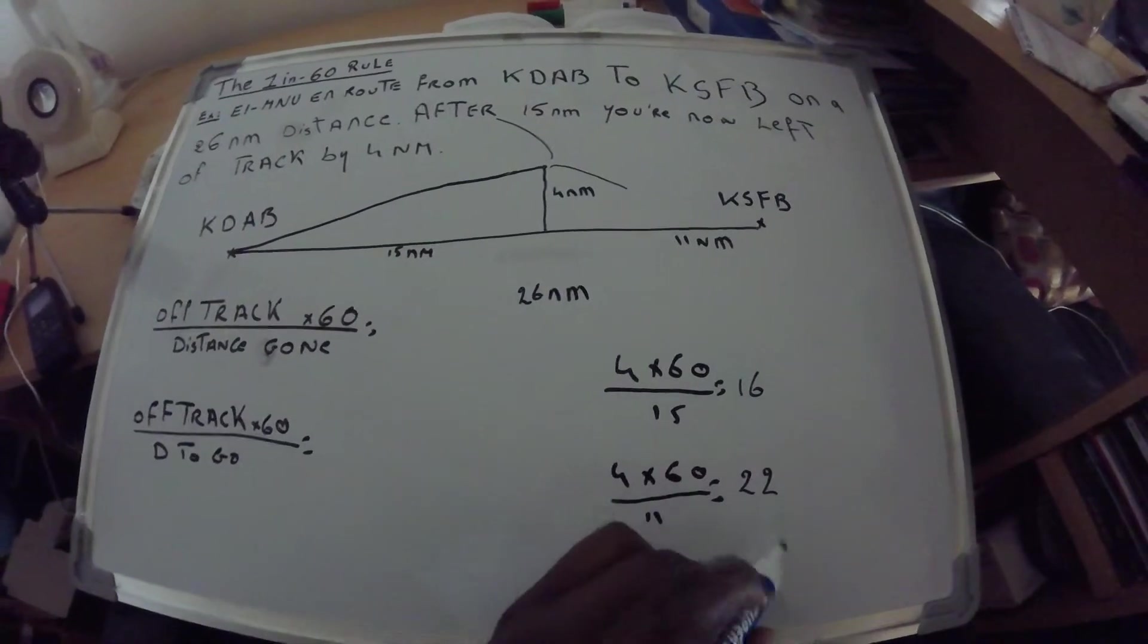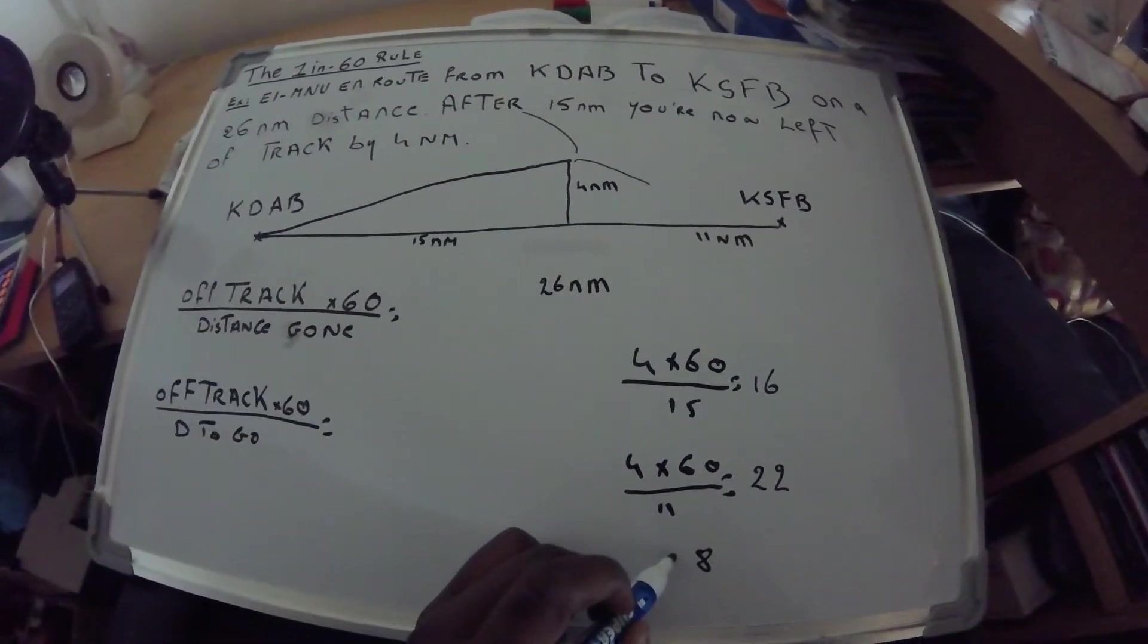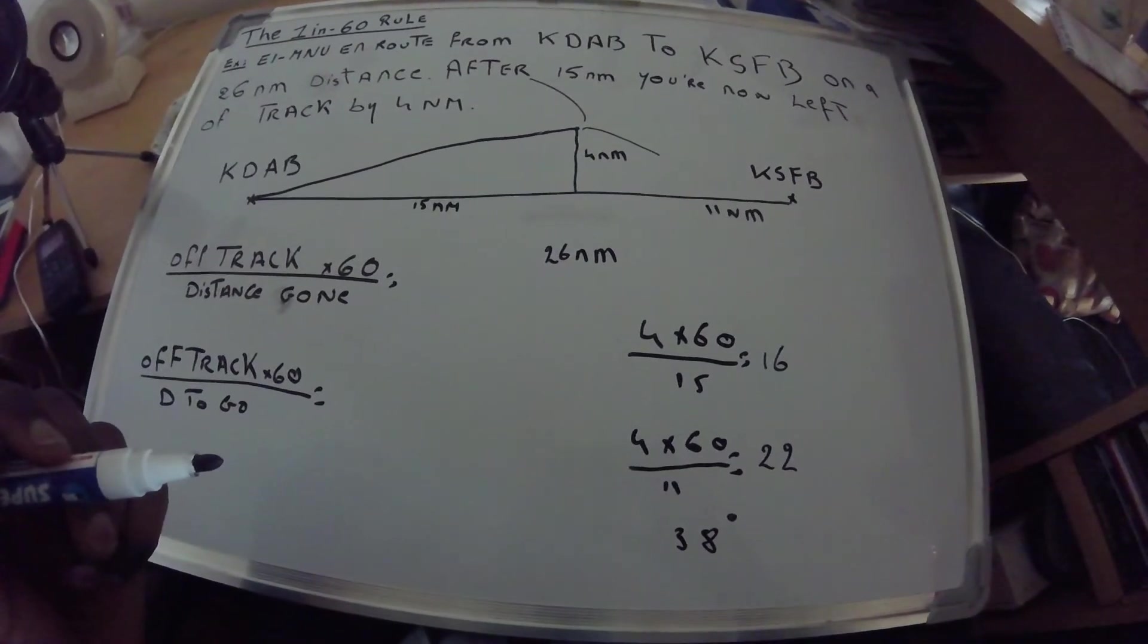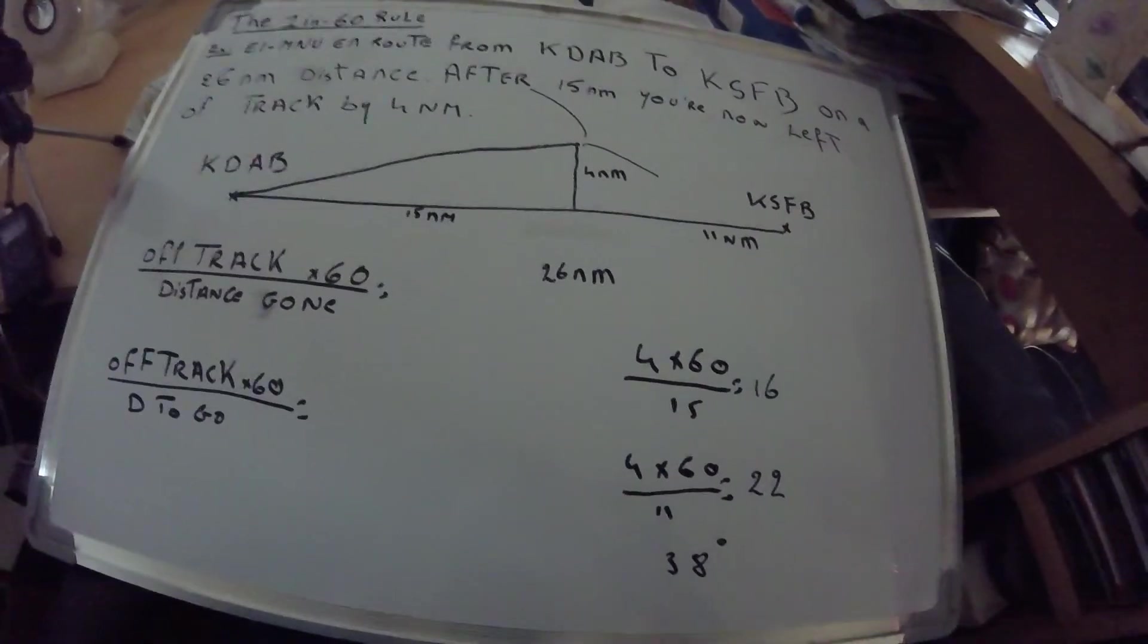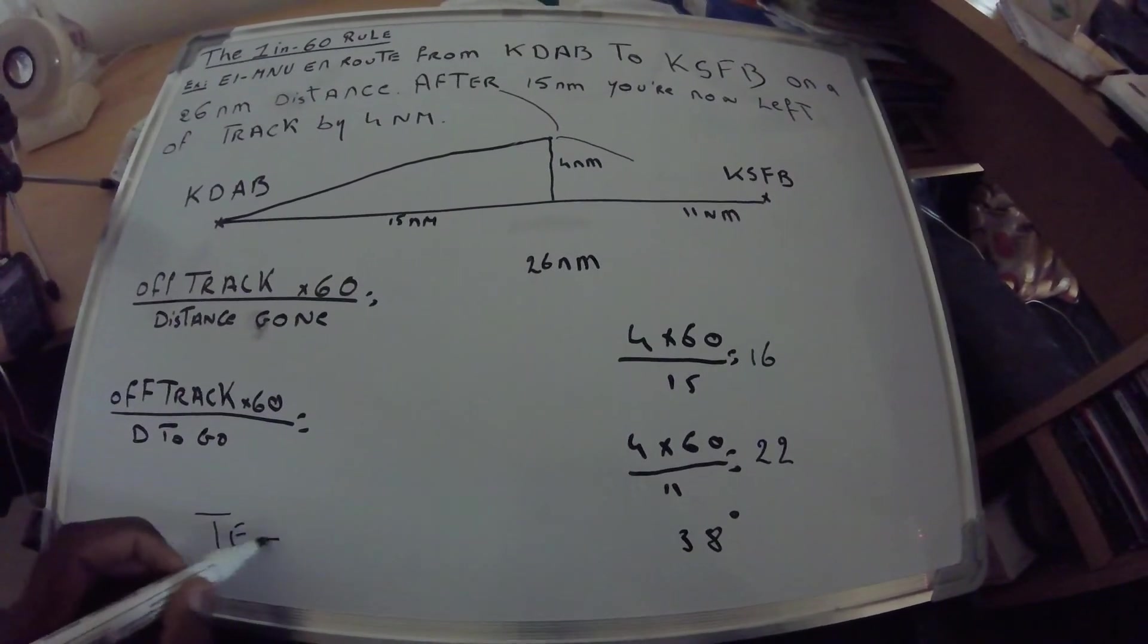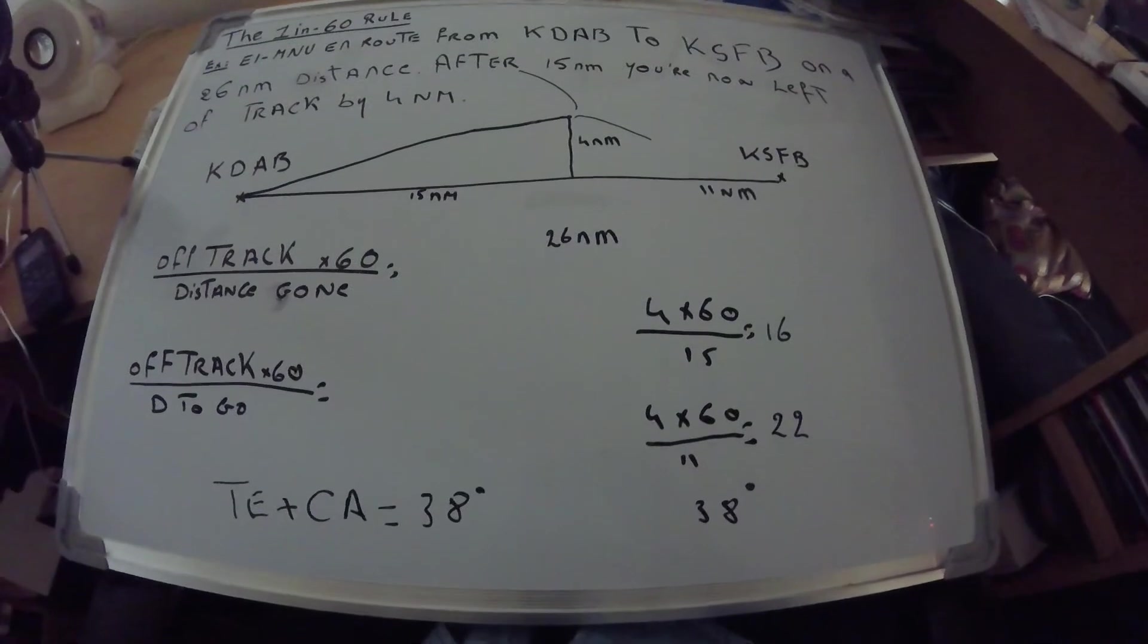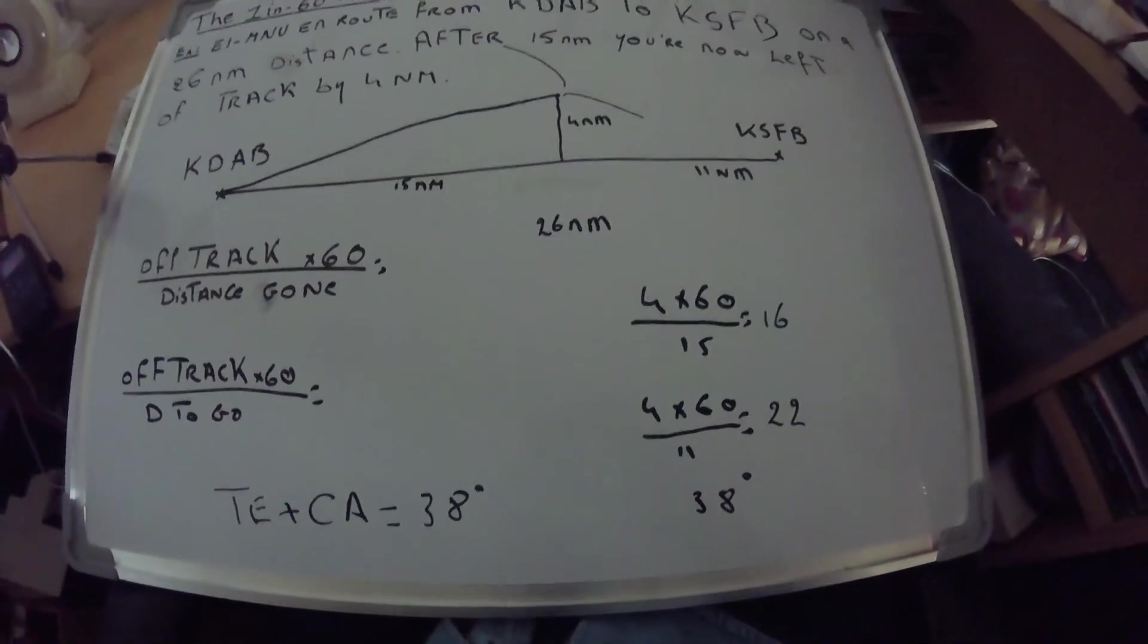So you add them two together, which should equal 38. So 38 degrees to your right will get you to your destination. Pretty simple. And that's why we have a track error plus course correction equals 38 degrees. So you can pause it, watch it, and do it again.